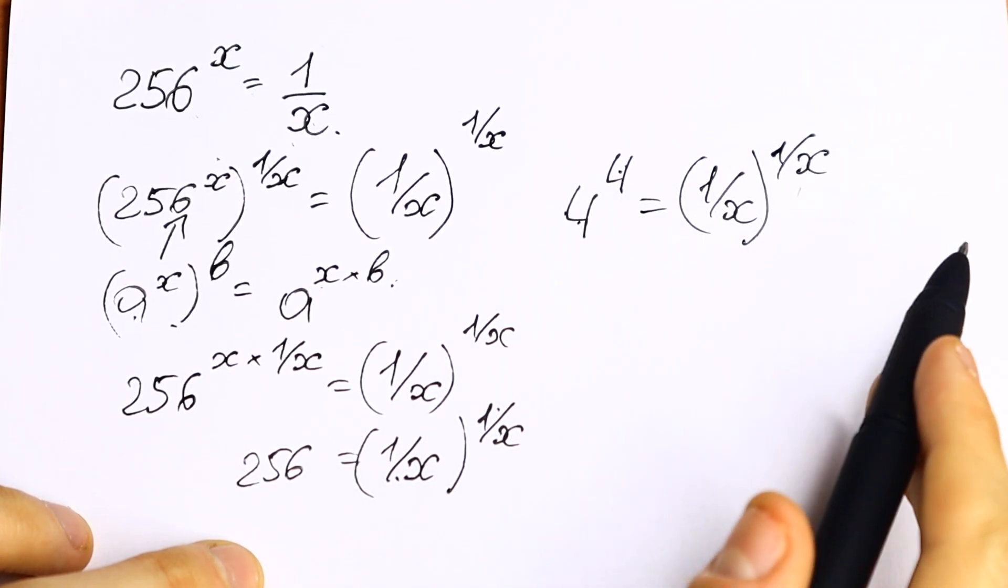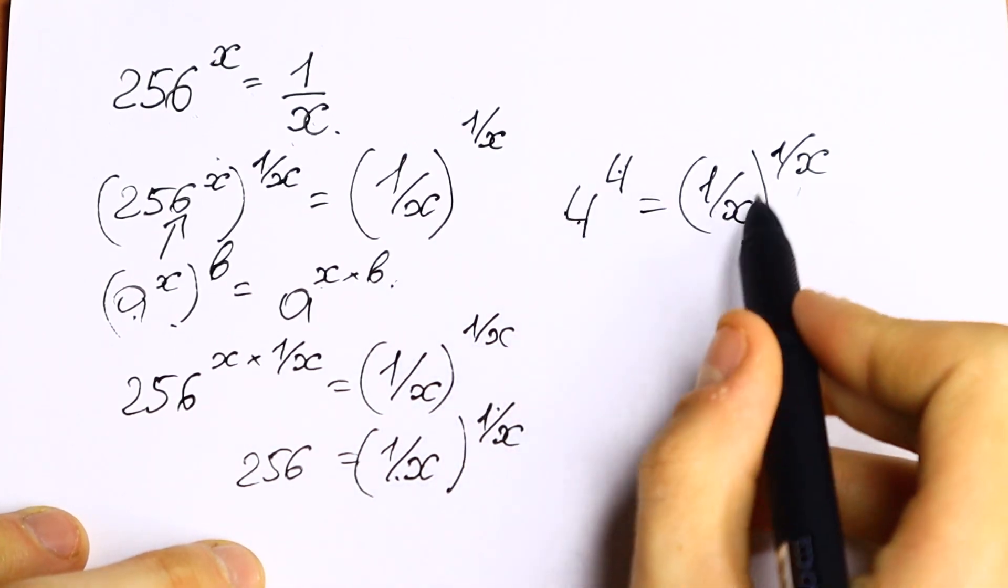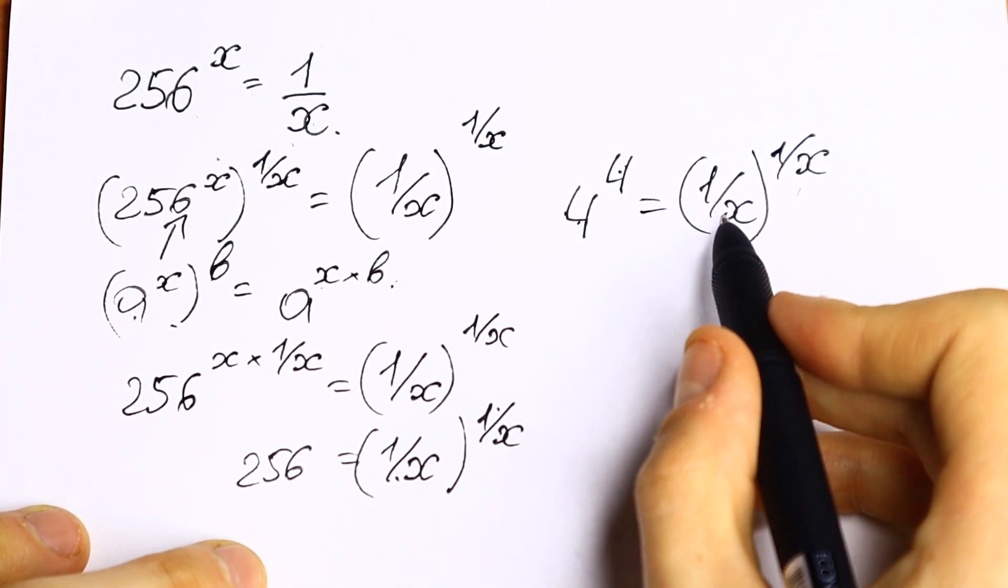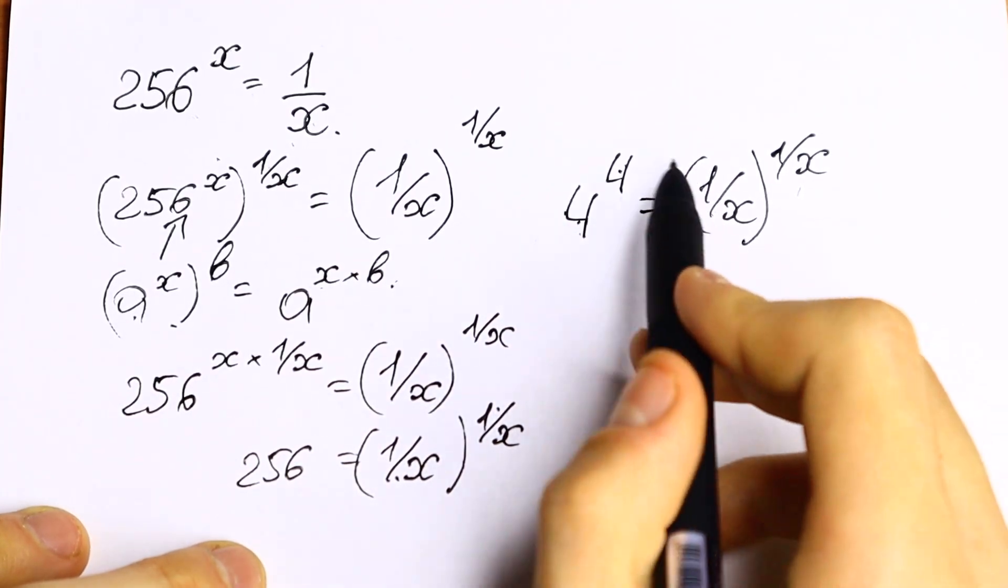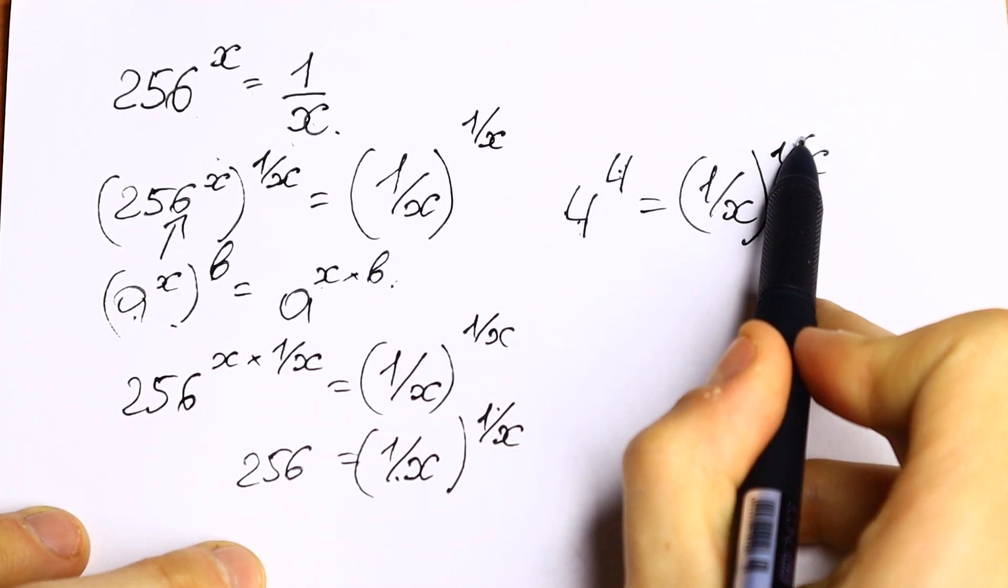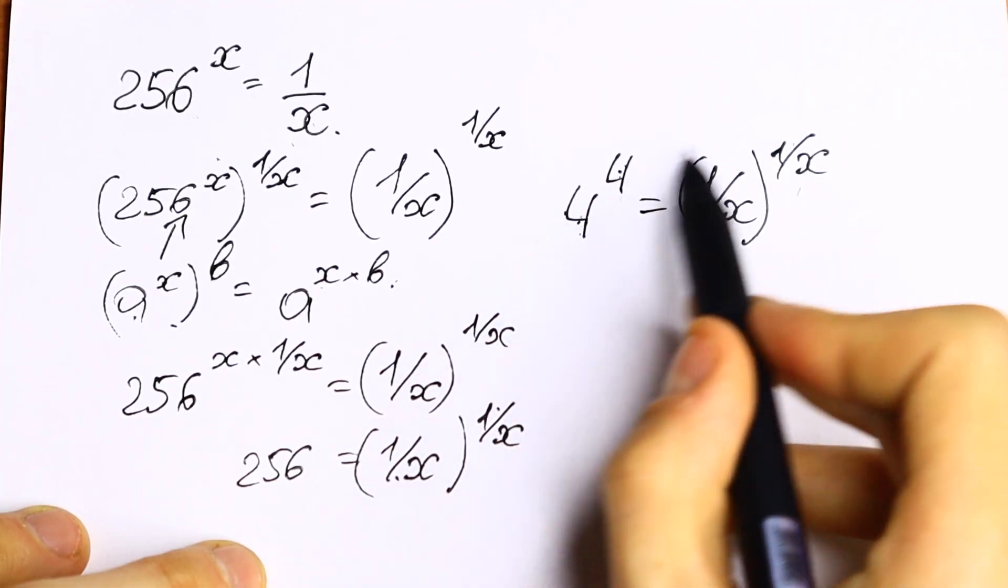And same base and same exponent on the right. So one and only way that this equation works, that this equation has roots, is when this base equal to this base, and this power, this will equal to this exponent, this power. Because this is the same.